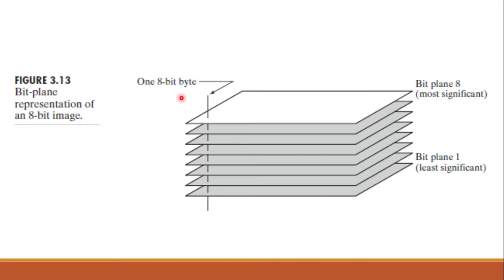One 8-bit byte or one pixel is composed of 1 bit from each of these planes. Bit plane slicing is a method of representing an image with one or more bits of the byte used for each pixel. One can use only the MSB to represent the pixel, which reduces the original grey level to a binary image. The 4 main applications of bit plane slicing are: first, converting a grey level image to a binary image; second, representing an image with fewer bits for image compression; third, enhancing the image by focusing on specific bit planes; and fourth, steganography — hiding information in one of the bit planes and transmitting it.